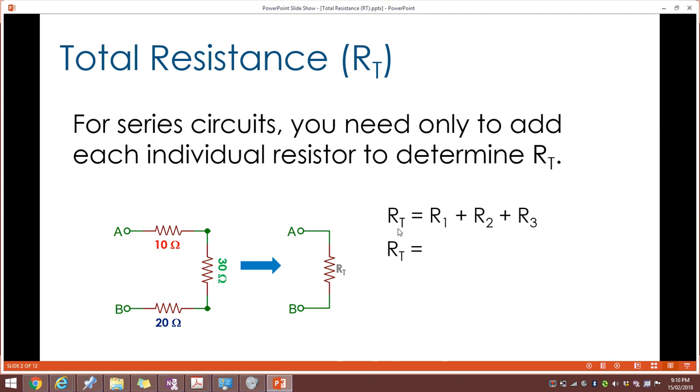So the equation is the total resistance is the sum of the first resistance plus the second plus the third. So let's fill that in. We take 10 ohms for the first resistor, 30 ohms for the second and 20 ohms for the third. We add them together and we can say that the total or effective resistance of this circuit is 60 ohms.